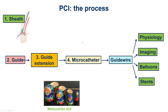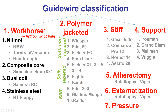To wire through this area, one option is to use microcatheters and guide extensions. In this case, we have four levels of telescoping: the sheath, the guide, the Proxis functioning as a guide extension, and fourth, a microcatheter as well as a polymer jacket wire, which are sometimes easier to deliver through areas of tortuosity. In a case like this, we use soft, non-tapered wires such as the Whisper, Pilot 50, Filter FC, and Sion Black.